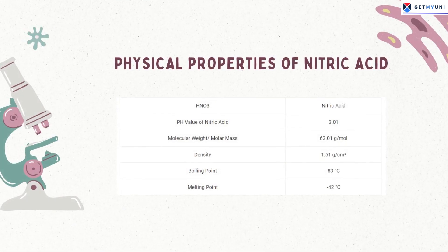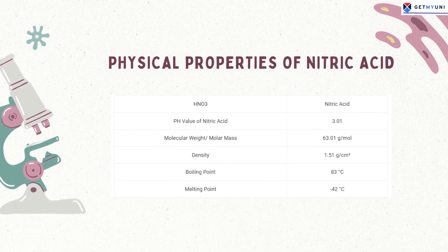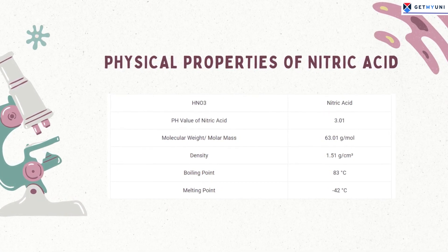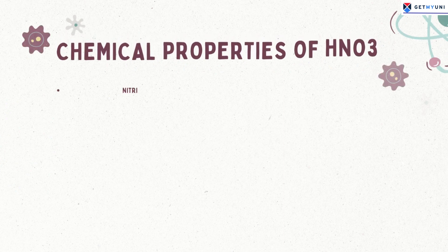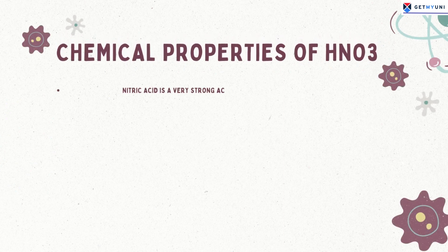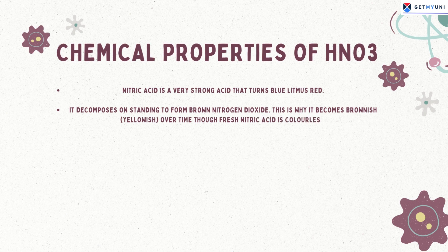Next up we have the physical properties of HNO₃. Here are some of the chemical properties of HNO₃: nitric acid is a very strong acid that turns blue litmus red. It decomposes on standing to form brown nitrogen dioxide, which is why it becomes brownish-yellowish over time.